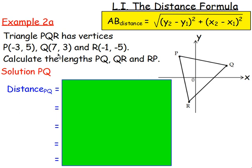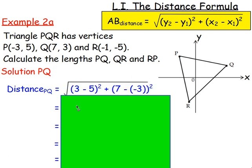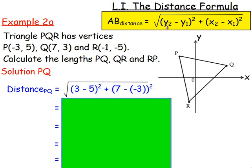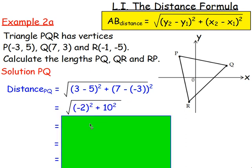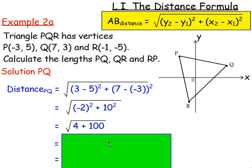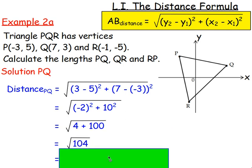So working out PQ. To do this, we know the points. So again, we can sub them into this distance formula up here. So first of all, we have the square root of, and then Y2 take Y1. So if we're looking at P and Q, it's going to be 3 minus 5 all squared. And then X2 take X1 is going to be 7 minus negative 3 all squared. If you work them out, 3 take 5 will give you negative 2. 7 take away negative 3. Remember, when you subtract a negative, you add. So 7 add 3, which will give you 10. Again, square them, you would get 4 add 100, which is 104.